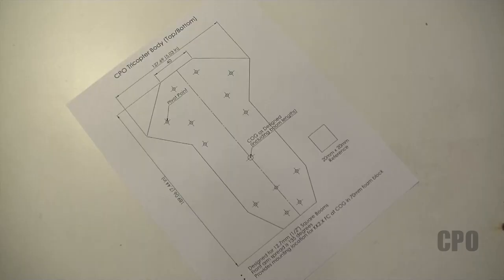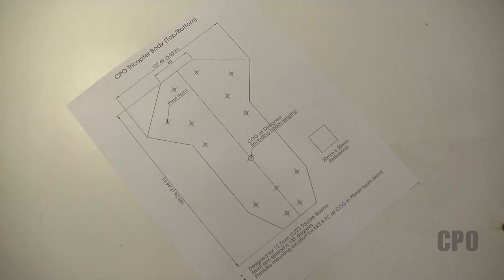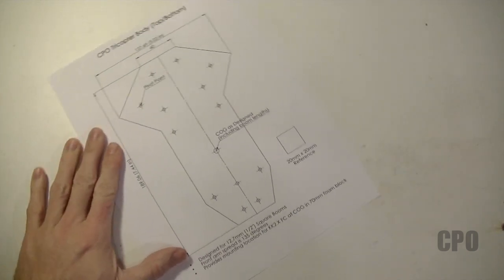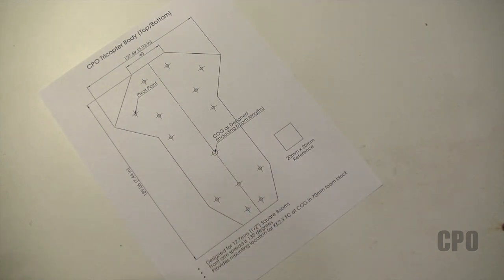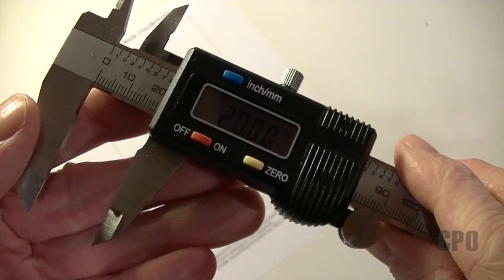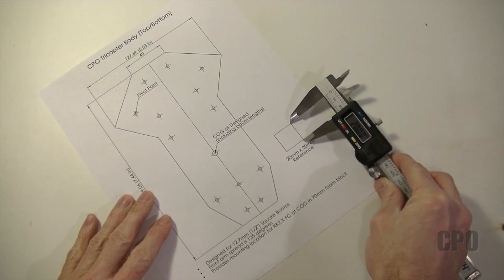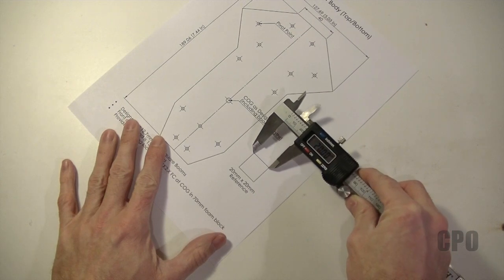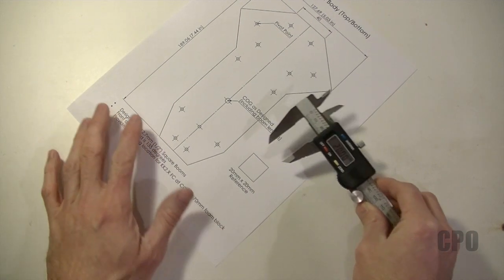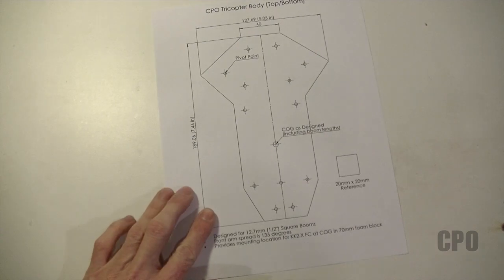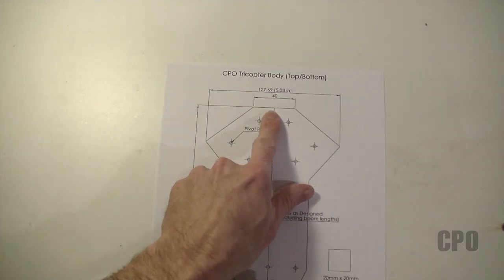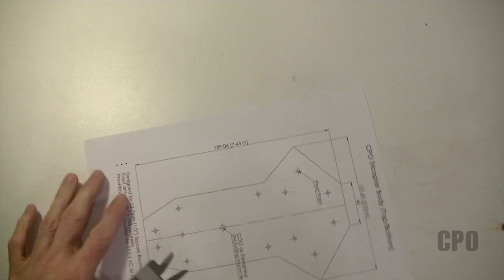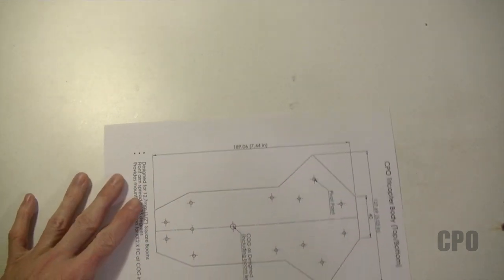The first thing I recommend you do after you print your plans is make sure they're to the exact scale that you need. As you can see on my plans I have a 20 millimeter by 20 millimeter reference box that I can measure with my caliper to make sure that my printout is exactly one for one from the plans. To do this I just set my caliper to 20 millimeters and then measure both the vertical and horizontal distances of my reference box to make sure everything printed out the way I'd like it. In this case it's dead on so we can continue. If however you have a plan that doesn't have a reference box like this, you can use a known value on the plans and make sure it measures out exactly the way it should.